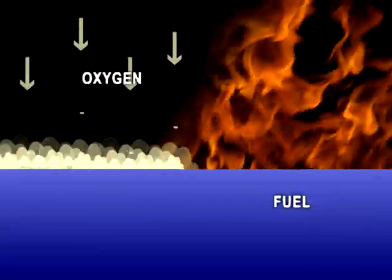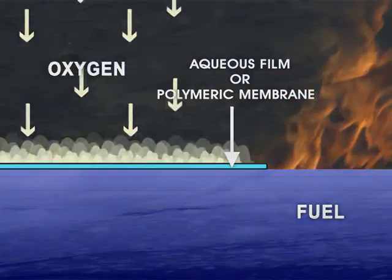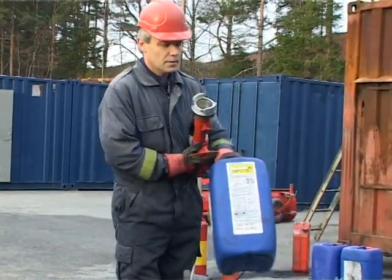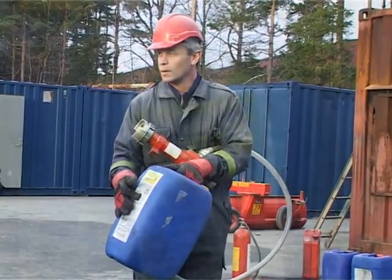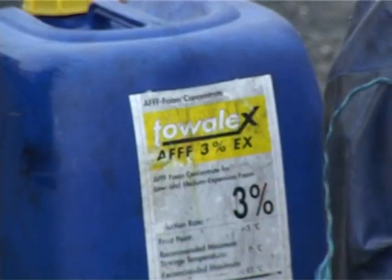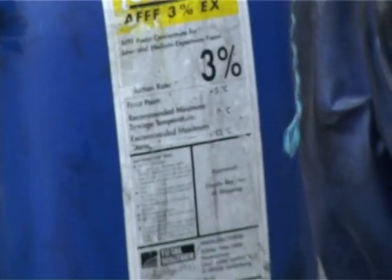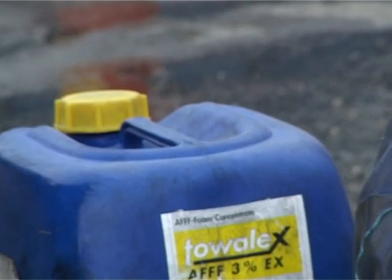Foam has a smothering effect on the fire, depriving it of oxygen. Foam is made up of foam concentrate mixed with water and supplied with air through a foam generator. Foams are defined according to their expansion ratio, which is the ratio of final foam volume to original foam solution volume before the addition of air.